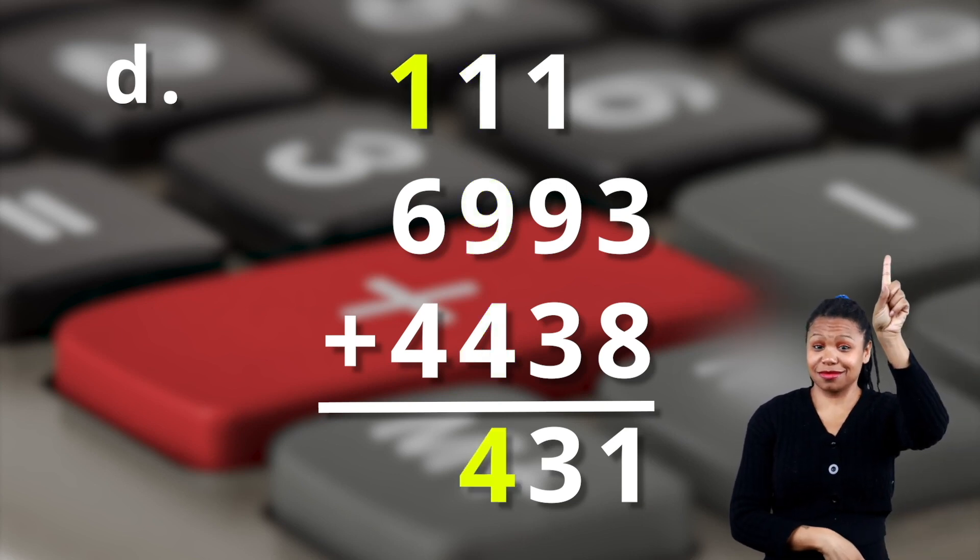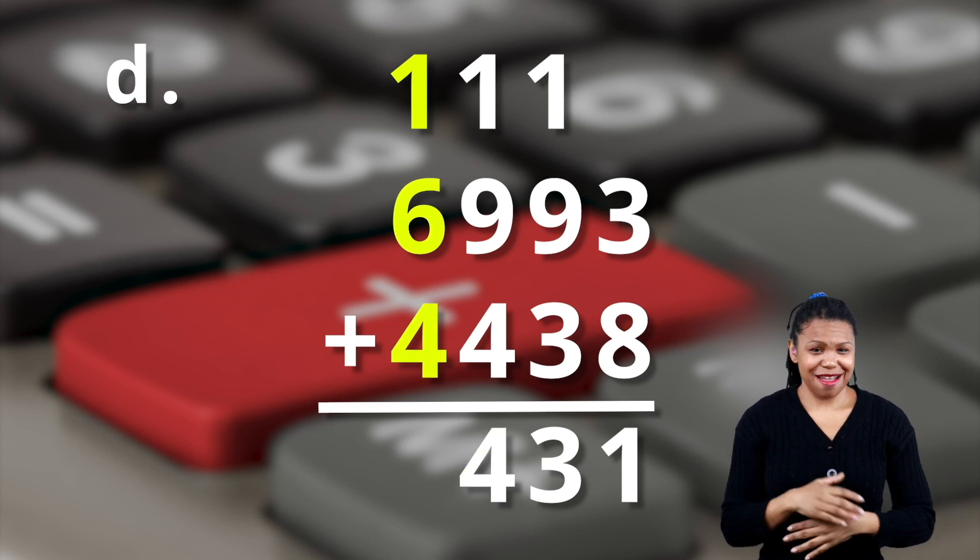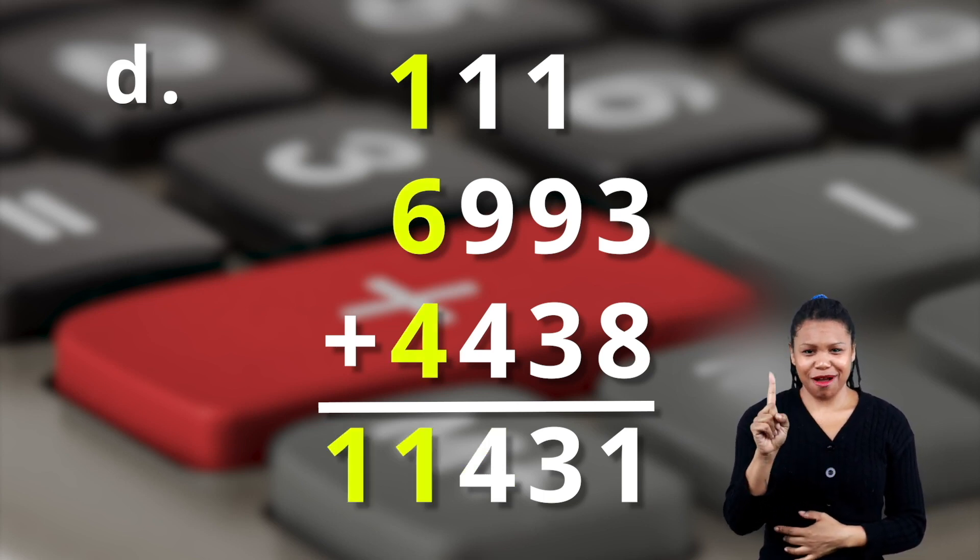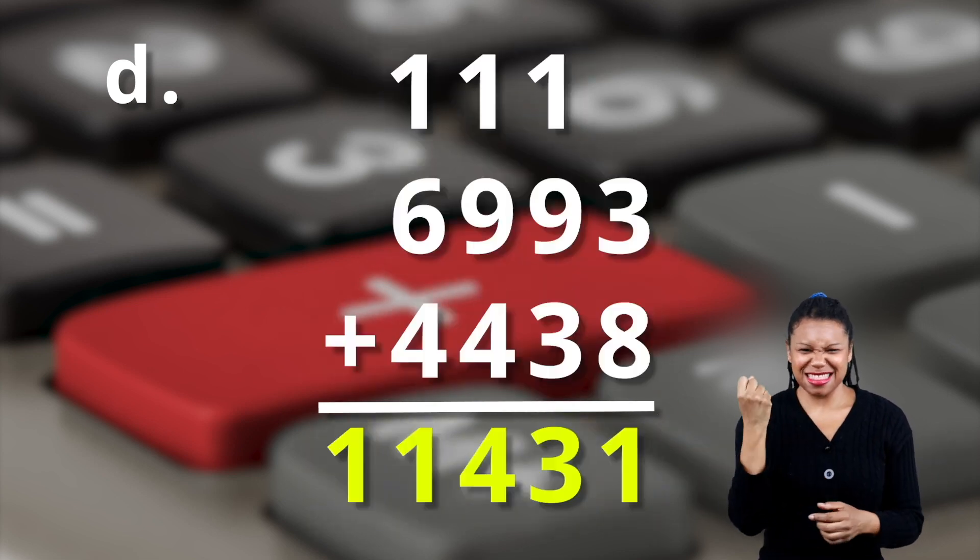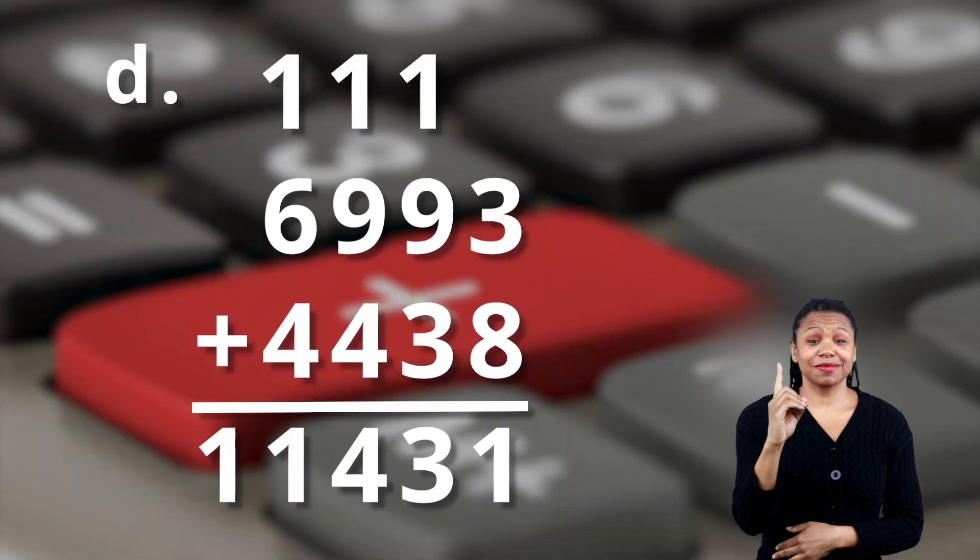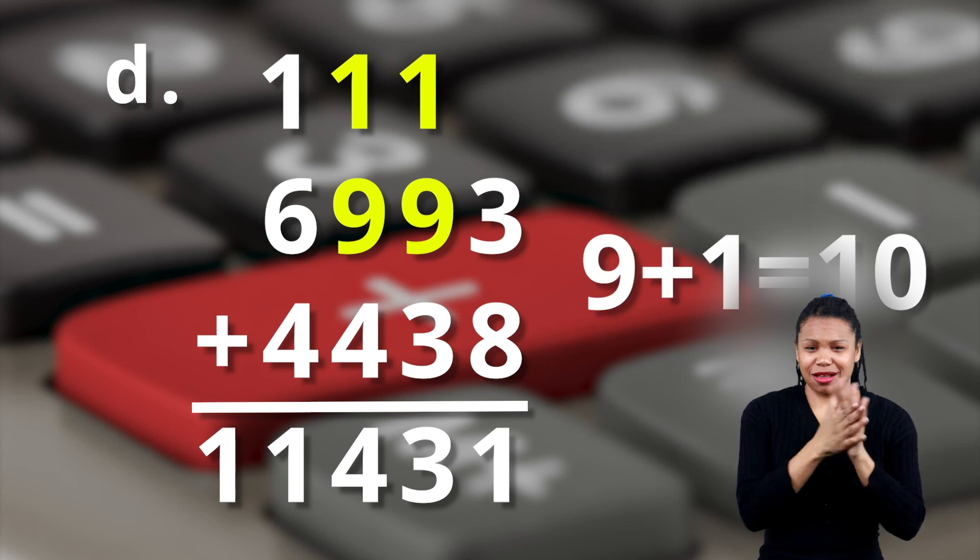So one plus nine plus four equals what? Yep, fourteen. Carry the one up into the thousands column. So you've got one plus six plus four, which is eleven. So what do you got? Yep, eleven thousand four hundred thirty-one. Great job. You got this. Notice in example D, when you regroup the tens and the hundreds, the nines are changed to tens.